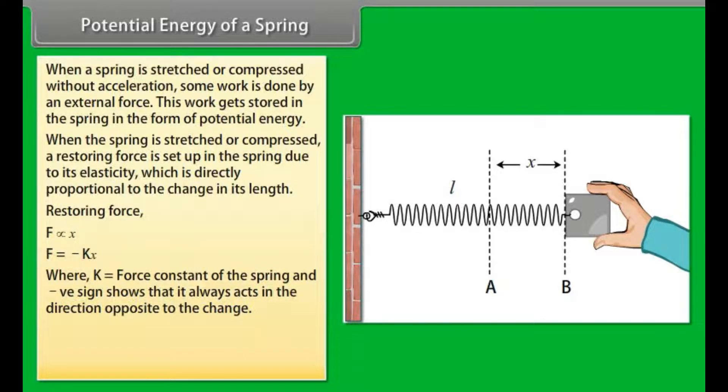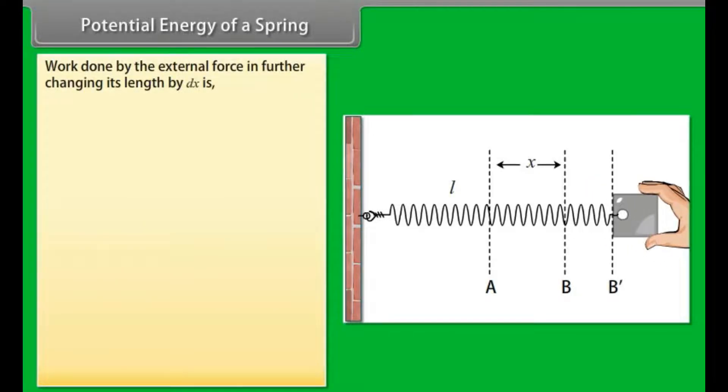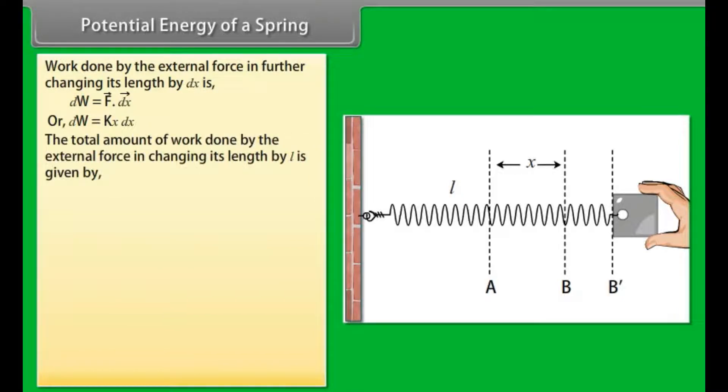Then external force required at this instant is given by F = kx. Work done by the external force in further changing its length by dx is dw = F⃗·dx⃗, or dw = kx dx. Now the total amount of work done by the external force in changing its length by L is given by W = ∫dw. By calculating it we get W = ½kL².